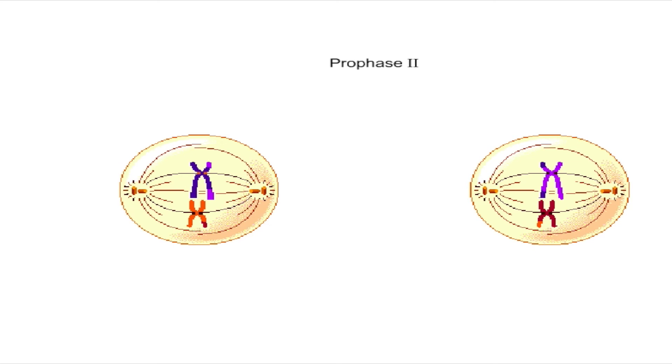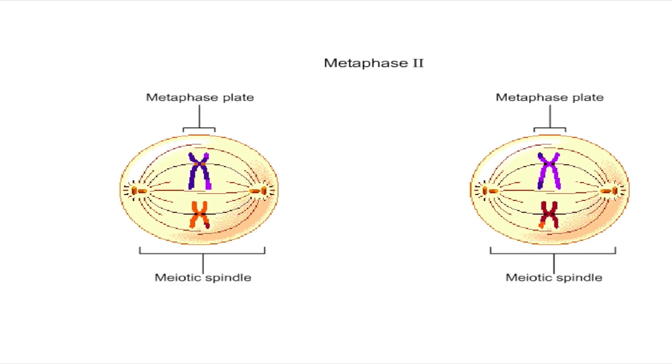During prophase two, the sister chromatids condense while the nuclear envelope disappears and the spindle apparatus forms. In metaphase two, the sister chromatids attached to kinetochore microtubules align on the metaphase plate, much as chromosomes do in mitosis.